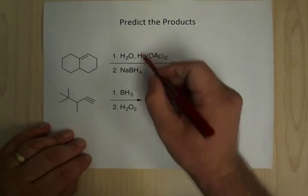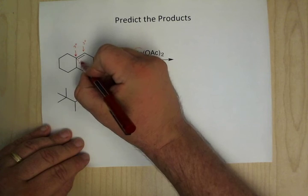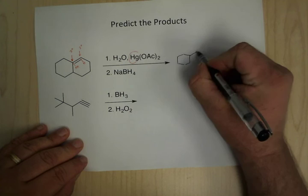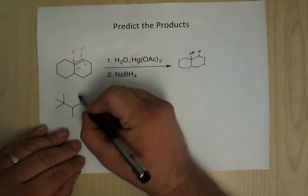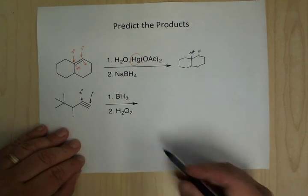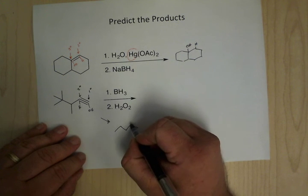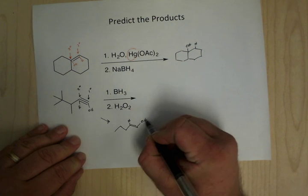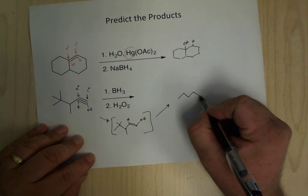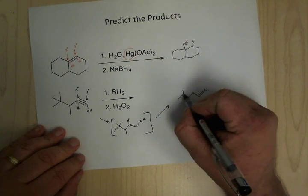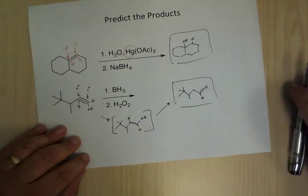For the oxymercuration example, we have mercury acetate and the double bond. This is tertiary versus secondary, so we're going to add HOH on the higher numbered side — that's what the compound looks like with OH there. For the hydroboration example, you have secondary versus primary, so we're going to add HOH across here — we get this enol intermediate that rearranges, putting the double bond there. There's a hydrogen there to make the aldehyde. So there we go — good luck.